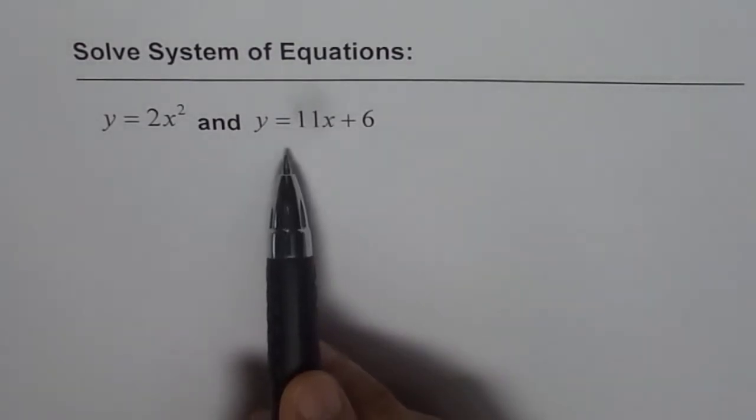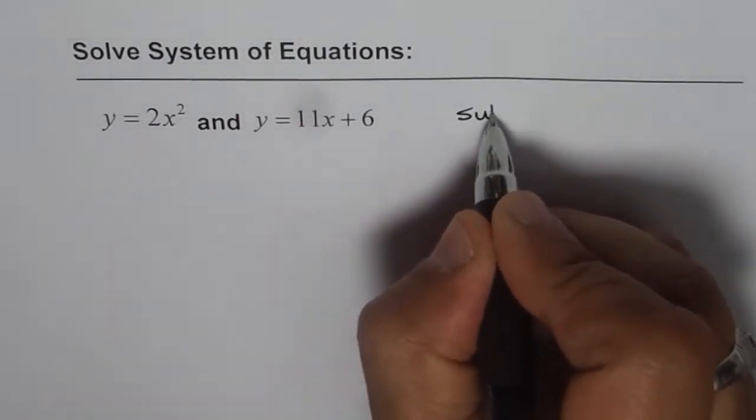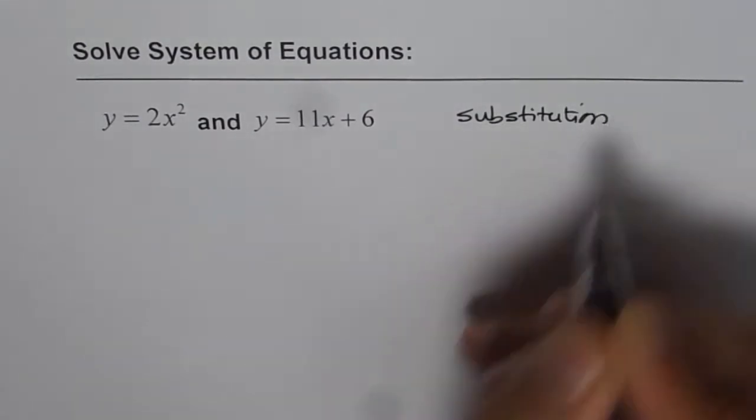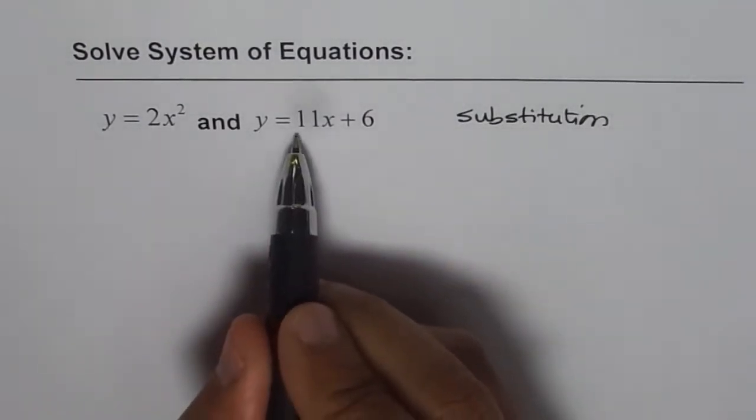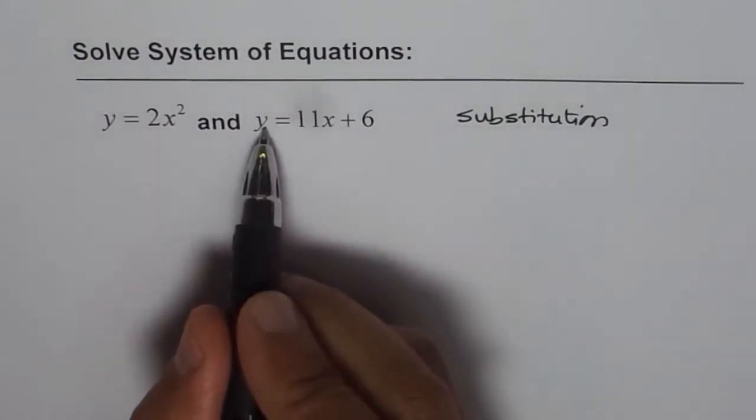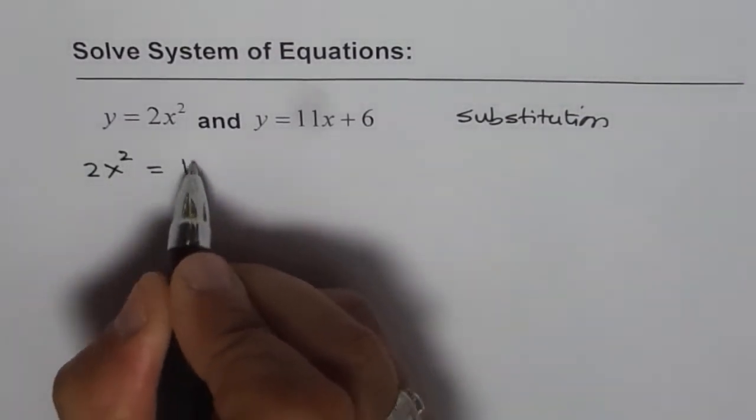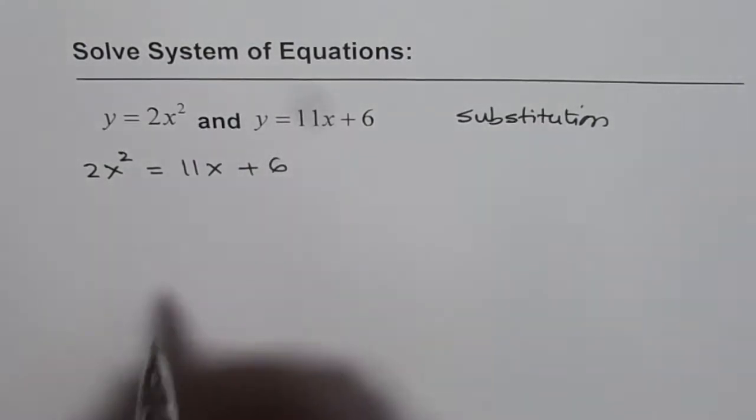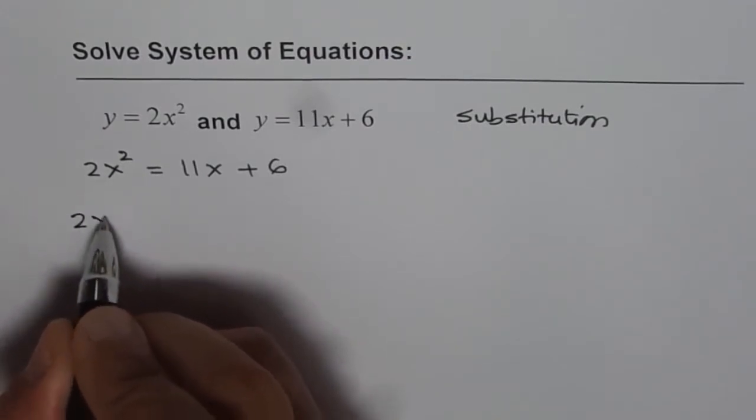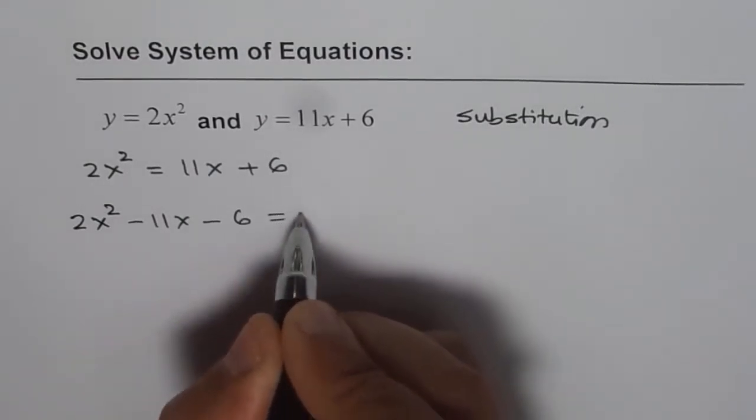The method used will be similar to what we used for a linear system and we will use substitution method to solve this equation. y equals to 2x squared and y equals to 11x plus 6. So I can always substitute this y as 2x squared. So I will get 2x squared equals to 11x plus 6. Now we can bring the terms together to the left side. So we get 2x squared minus 11x minus 6 equals to 0.